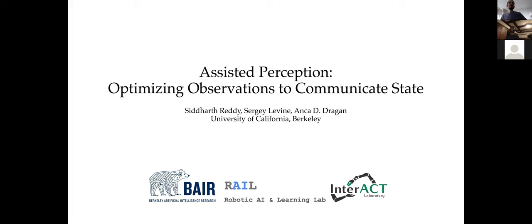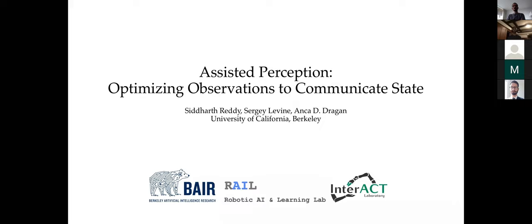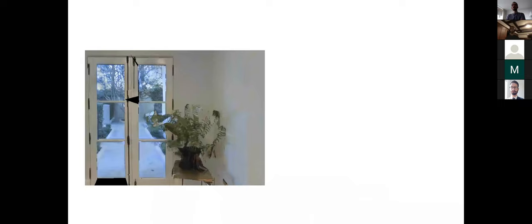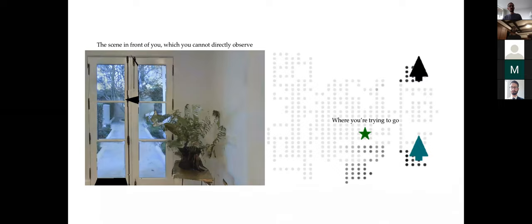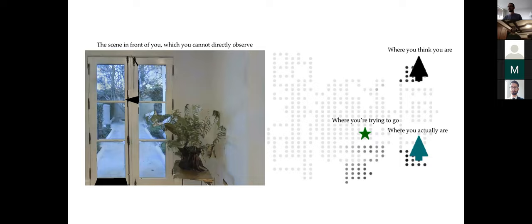For the first half of this talk, I'd like to present some of our recent work on assisted perception. The goal of this project is to help users estimate the state of the world in sequential decision-making tasks like robotic tele-operation and navigation with visual impairments. Consider a visually impaired user trying to navigate a house — they can't directly perceive the scene. From a bird's-eye view, they might think they're in one corner when they're actually in a different corner.